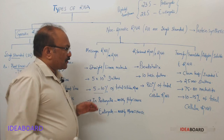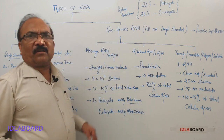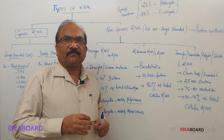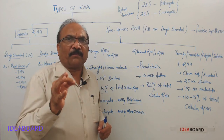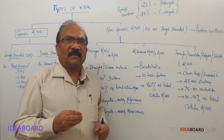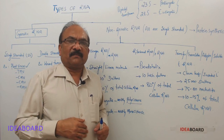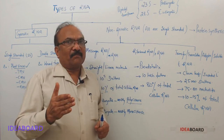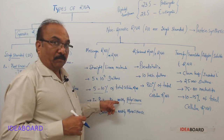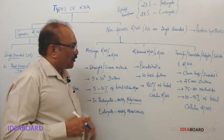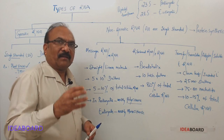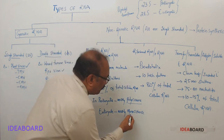Remember, messenger RNA in prokaryotes is mostly polycistronic. What does that mean? A cistron is a unit of DNA having information for the formation of a polypeptide chain or a protein. If the mRNA has information for many proteins, it is called polycistronic - this is a very important point, and it is mostly polycistronic in prokaryotes. When we come to eukaryotes, generally the mRNA will have information for one protein, so it is called monocistronic mRNA.